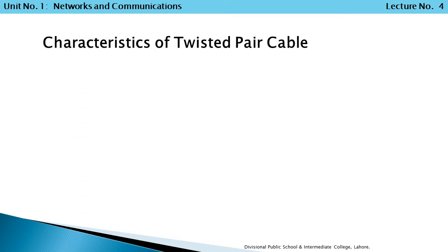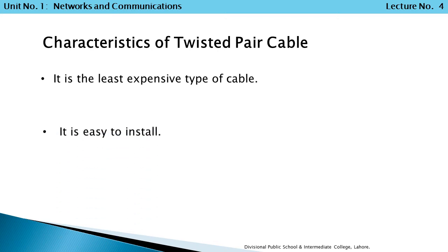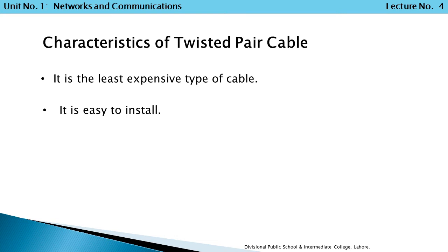Characteristics of Twisted Pair Cable. Number 1: It is the least expensive type of cable, making it easy to purchase. Number 2: It is easy to install, so installation in a local area network is very straightforward. It is the most common form of cabling found in local area networks today because of these characteristics.